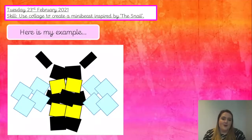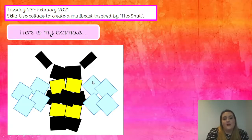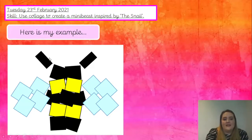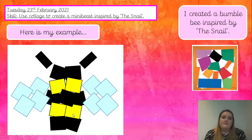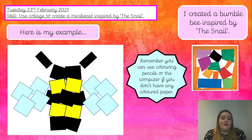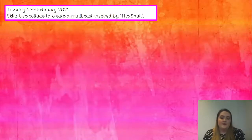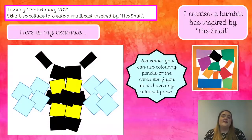Here is my example. As I mentioned, I didn't have any coloured paper at home — I didn't have any yellow — and I really wanted to make a bumblebee. So I decided to make mine on the computer, which you can do too. I've got different coloured boxes and shapes, and I arranged them to make my bumblebee — you can see the antennae, the wings, and the stripy body. I created the bumblebee inspired by the snail. Remember, you can always use colouring pencils instead. Pause the video and start making your collage now.